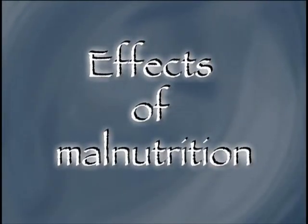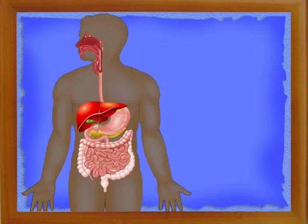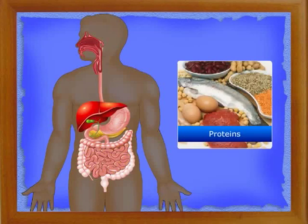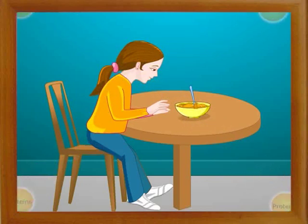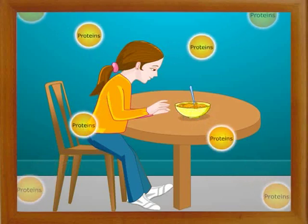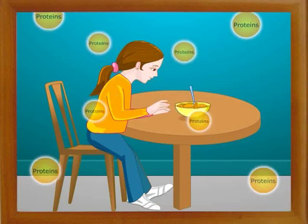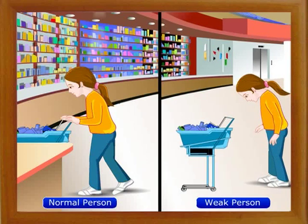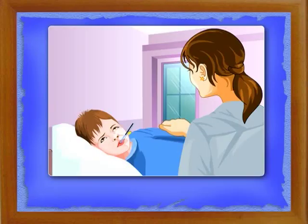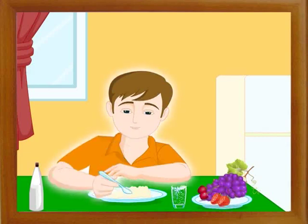The long-term effects of malnutrition are different in adults and children. Once stored carbohydrates and fats are used up, the body starts using proteins to generate energy. Proteins play a very important role in body building — they form the bulk of muscles and bones. During starvation, proteins of the muscle tissue are broken down to generate energy. As a result, the person loses muscle mass, becomes very weak, fails to perform daily activities, and the body becomes prone to various infections. However, when such people are given a proper diet, they recover quickly and become normal.